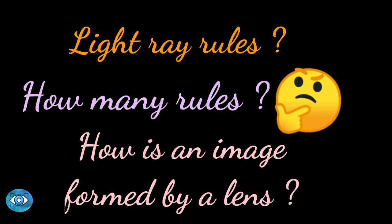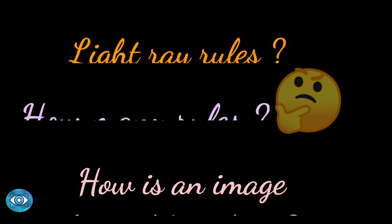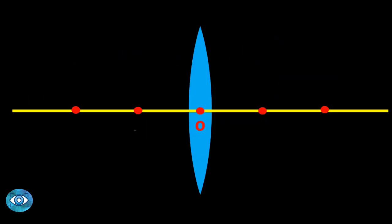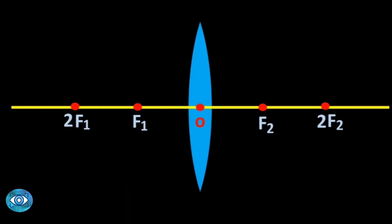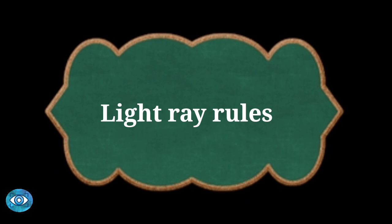In this video we are looking at how to apply the rules for creating the image. First we need to draw the convex lens with points f1, f2, 2f1, and 2f2 — all these points are at the same distance from each other. There are three rules for convex lens.